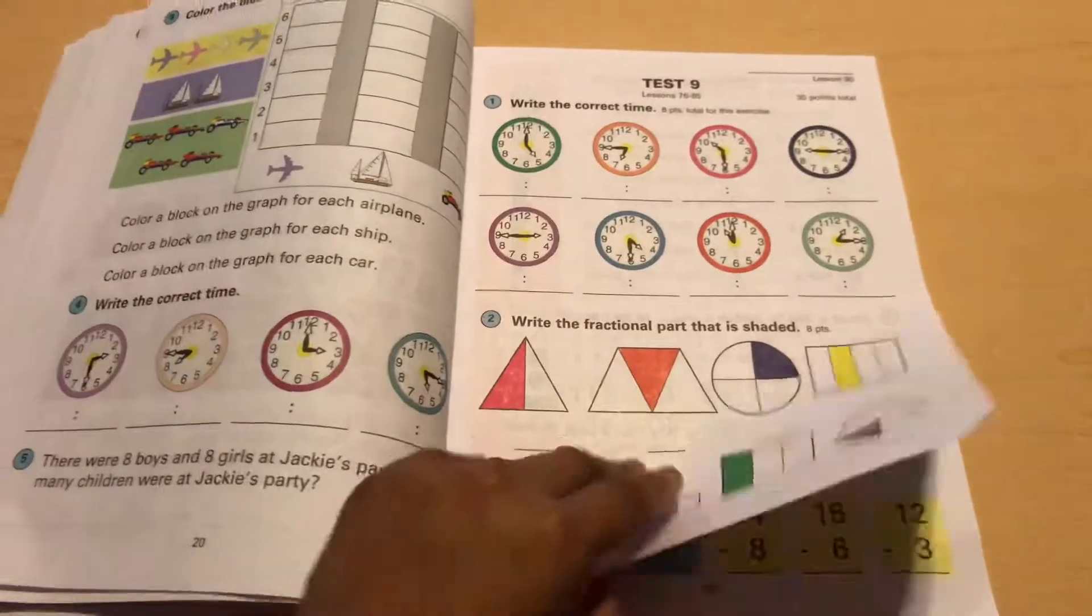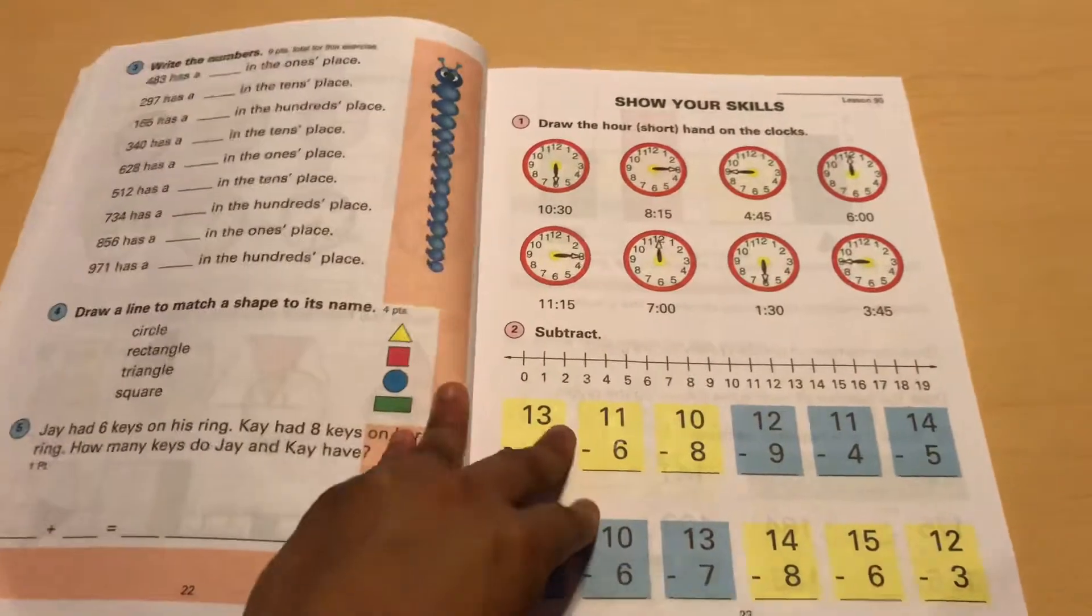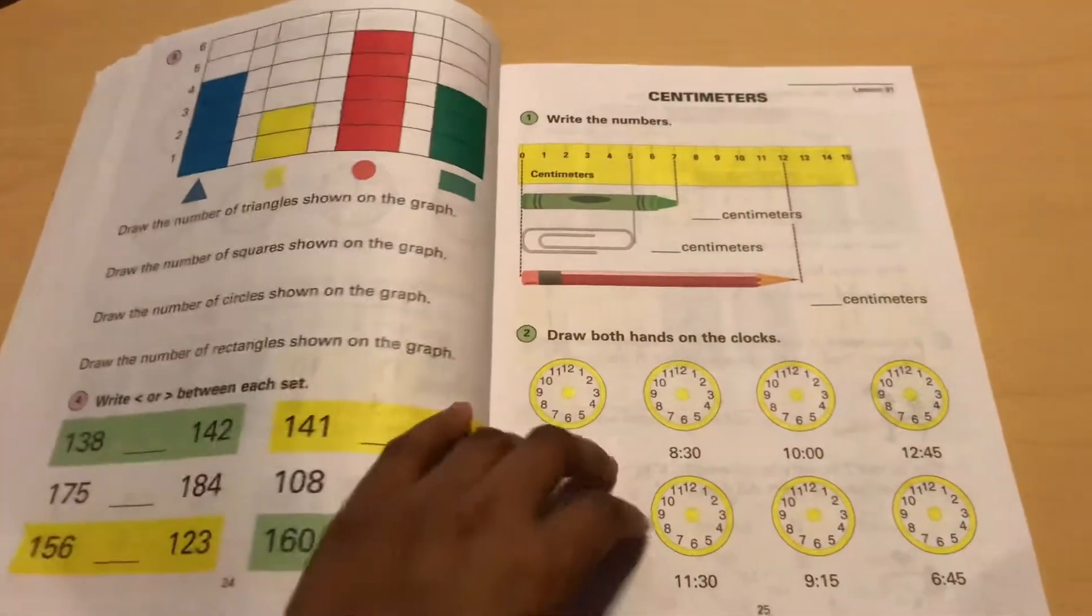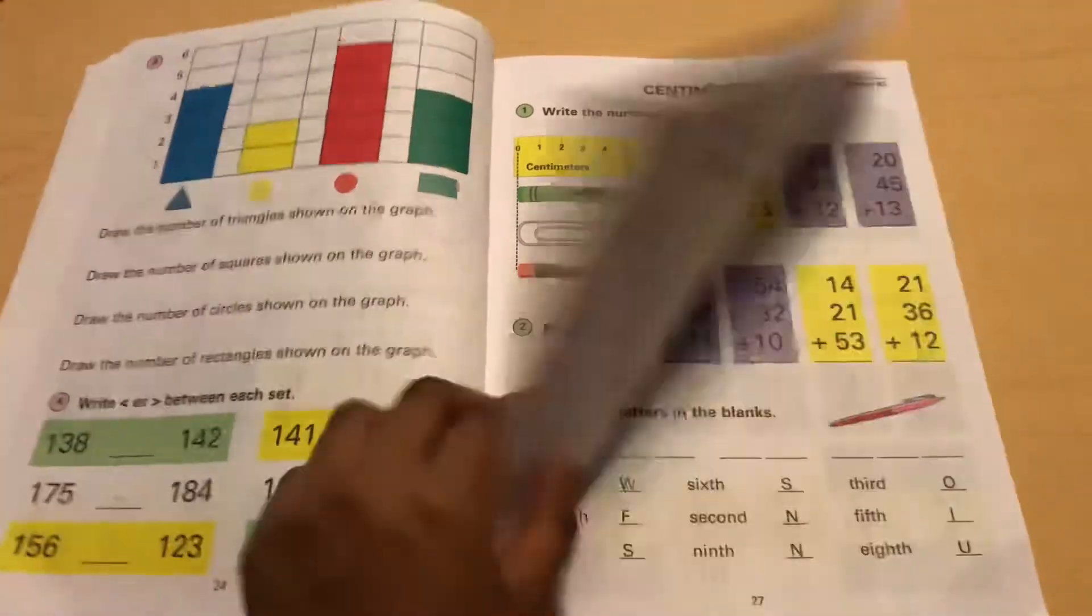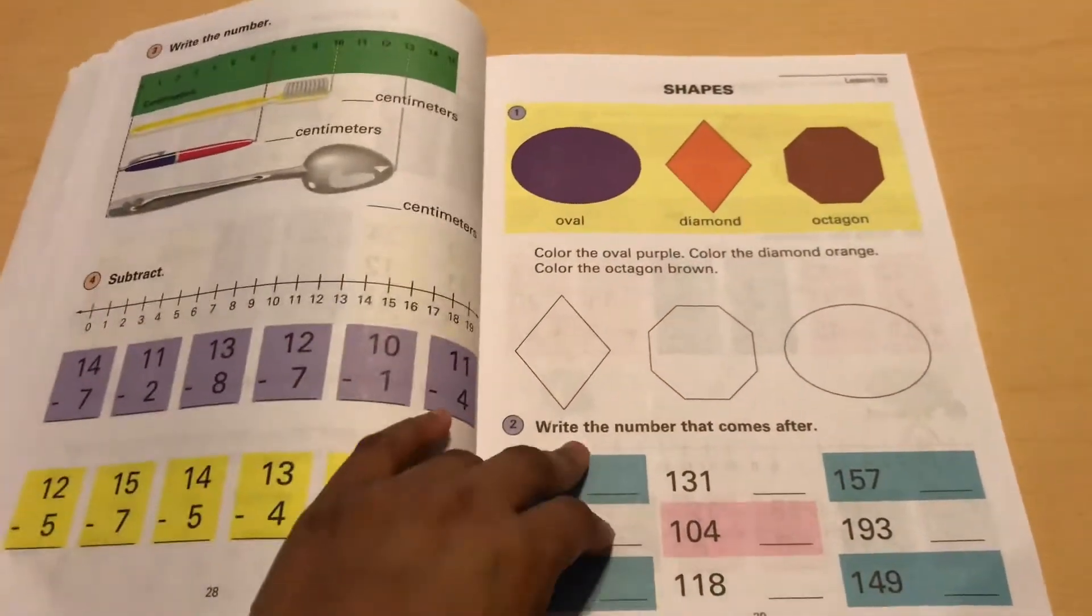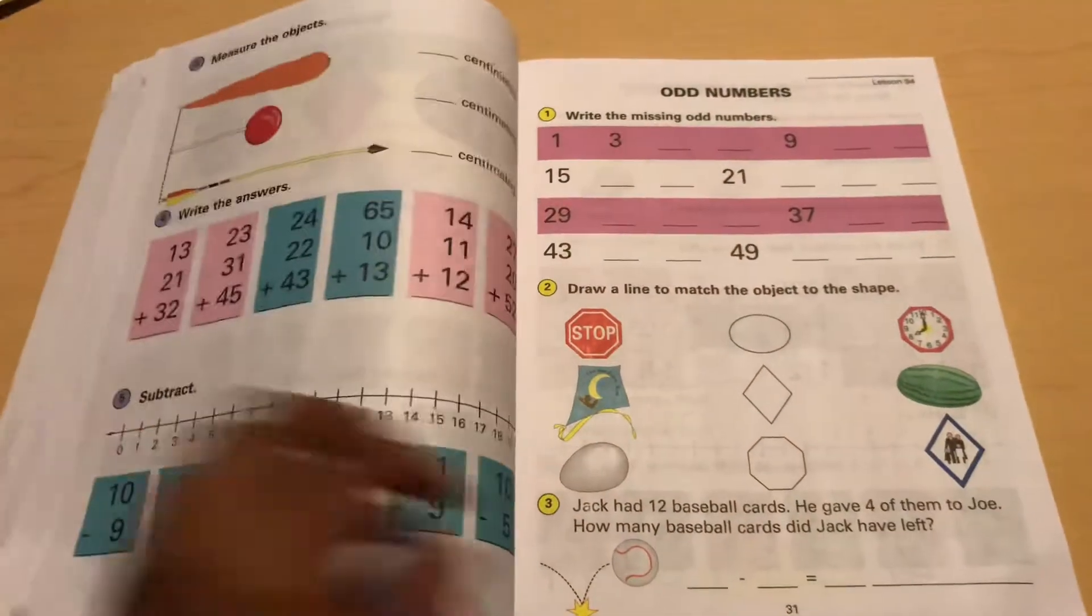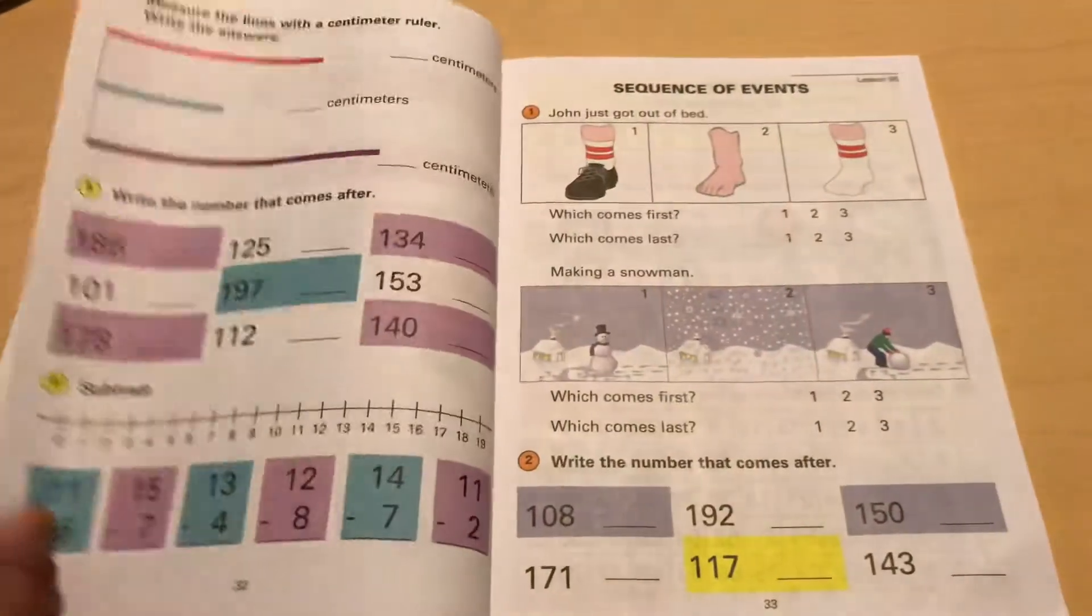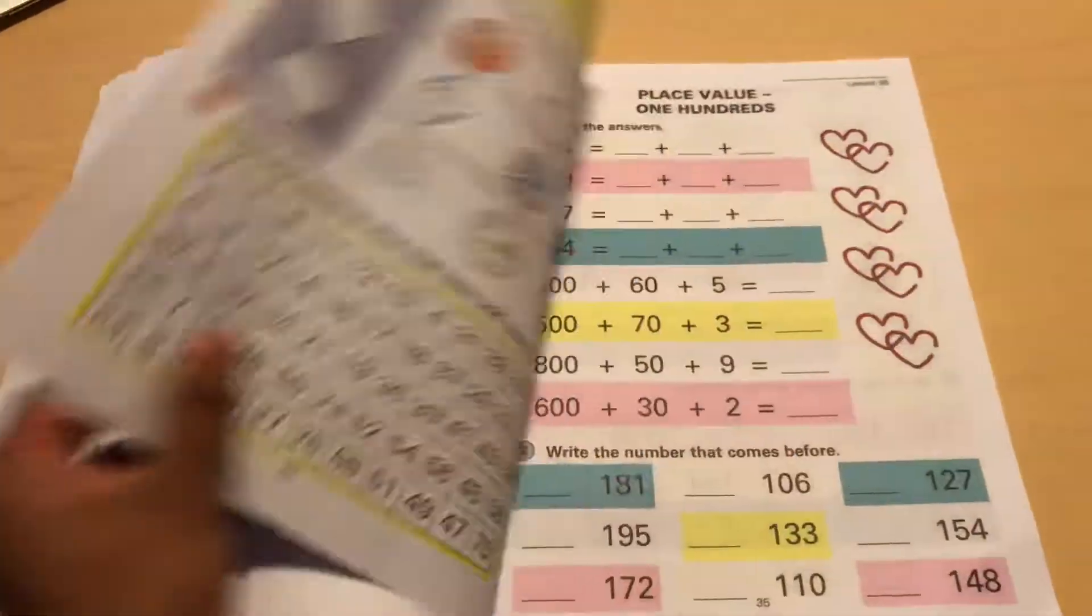I do like that they have tests for Monique because she's the kind of student that I need to see if she's understanding everything that the curriculum is teaching her. Where David, they do have tests for ABEKA, but I don't use them because I didn't buy them.